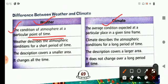Weather changes from day to day, hour to hour, or minute to minute. But climate is an average condition expected at a particular place in a given time frame.